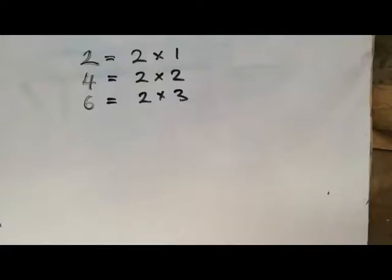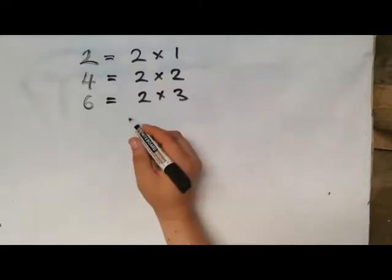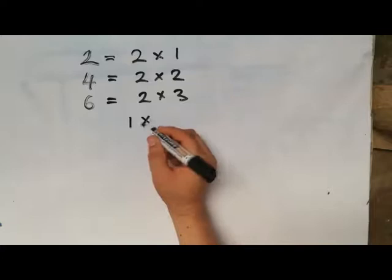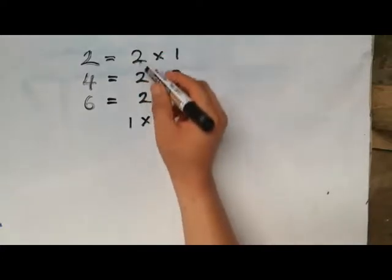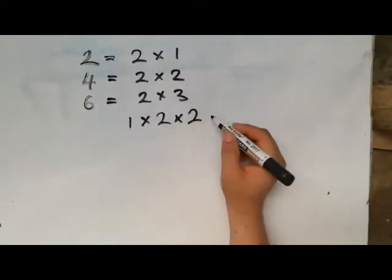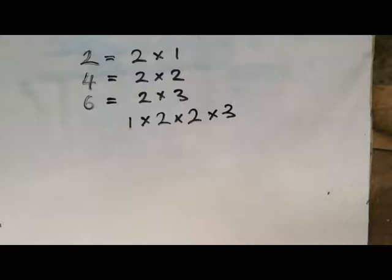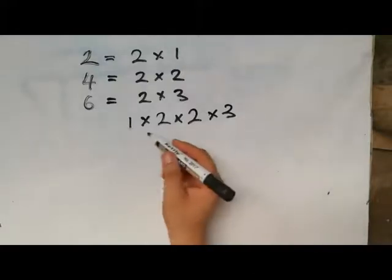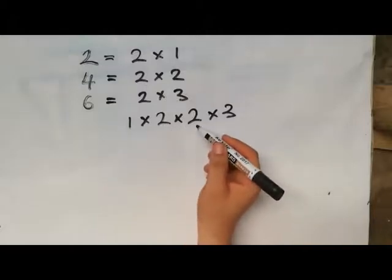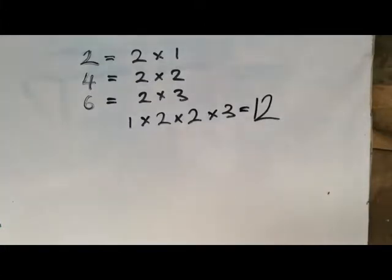Looking at the numbers: we have 2 in common across them, so we just take one 2. We have another 2 and we have 3. So we have chosen the prime factors of these 3 numbers. All we need to do now is multiply them: 1 times 2 is 2; 2 times 2 is 4; 4 times 3 gives us the same answer we got in the first method — 12. This method is called the prime factorization method.